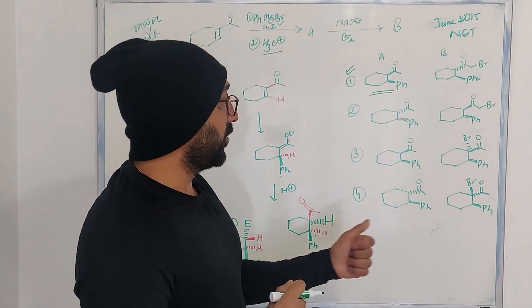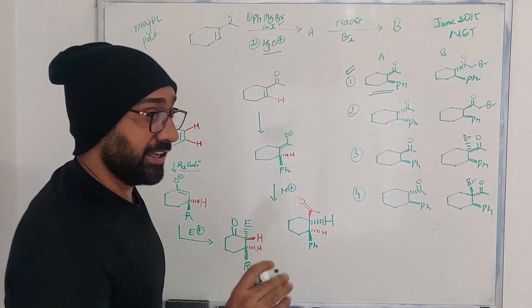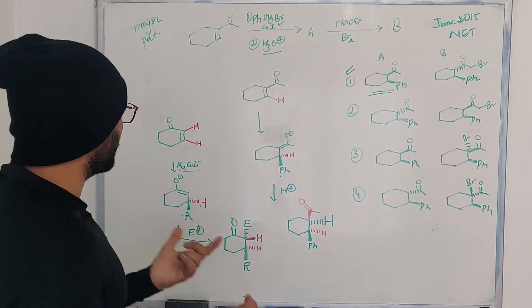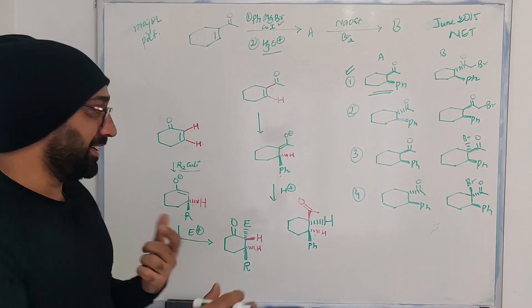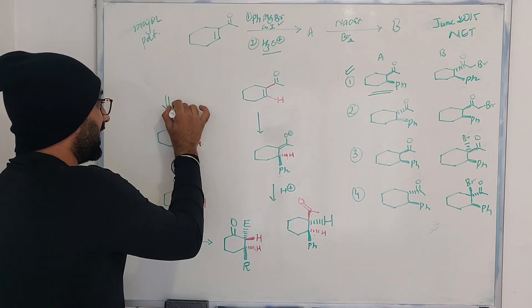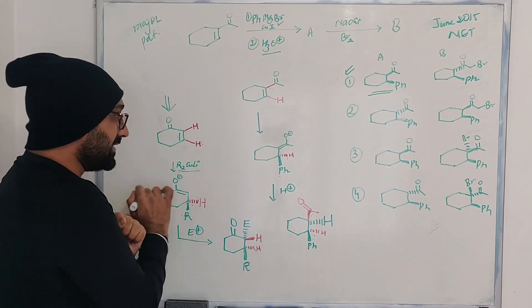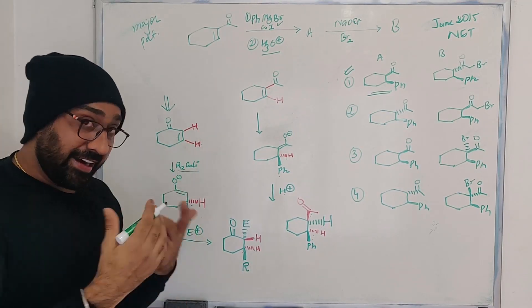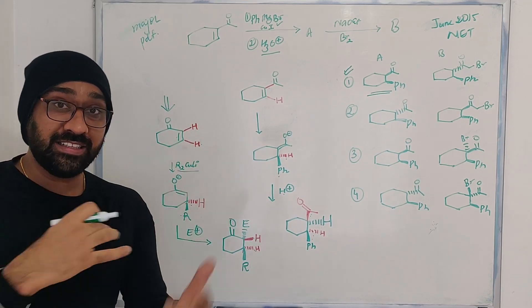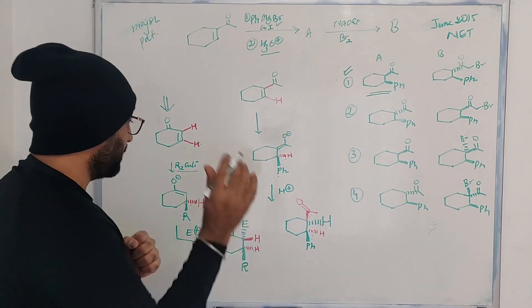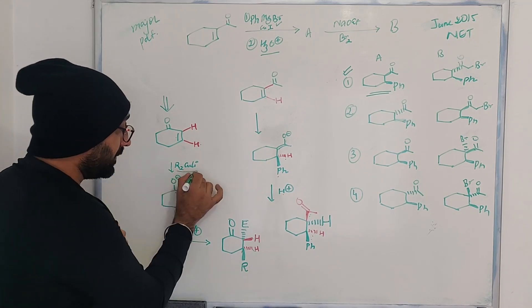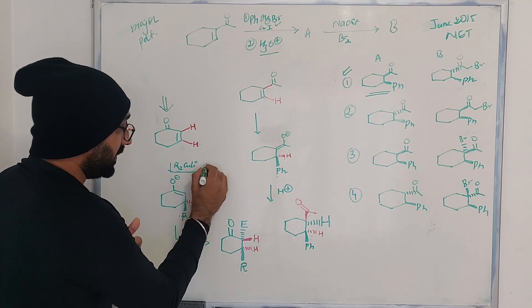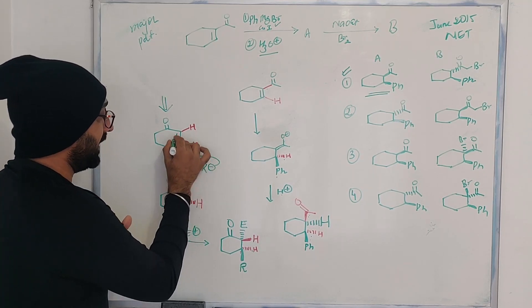First we are going to look at the first step. Let us first go back and try to see what is happening in the conjugate additions. So I am going to start from the cyclohexenone. Let us consider our cyclohexenone in which both these hydrogens I have labeled as different, because at the end of the reaction we want to see where they end up becoming.